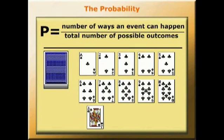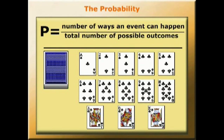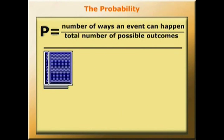Each suit has an ace, 2 through to 10, a jack, a queen and a king.